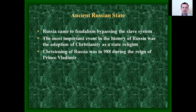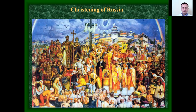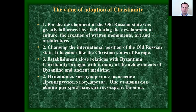Russia came to feudalism bypassing the slave system. The most important event in the history of Russia was the adoption of Christianity as a state religion, which occurred in 988 during the reign of Prince Vladimir. For the development of the old Russian state, this was greatly influential in facilitating the development of culture, the creation of written monuments, art and architecture, and changing the international position of the old Russian state — it became like the Christian states of Europe.